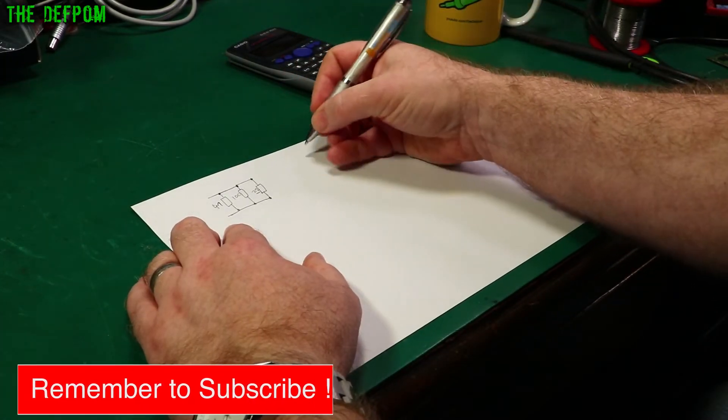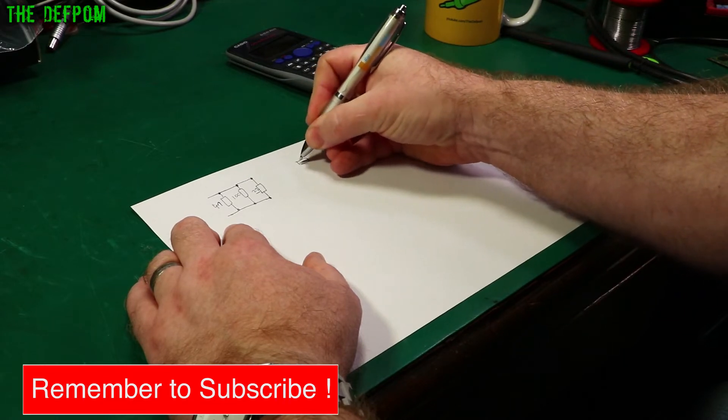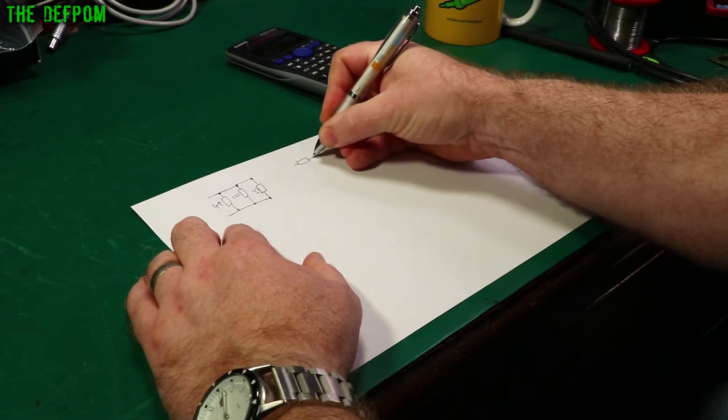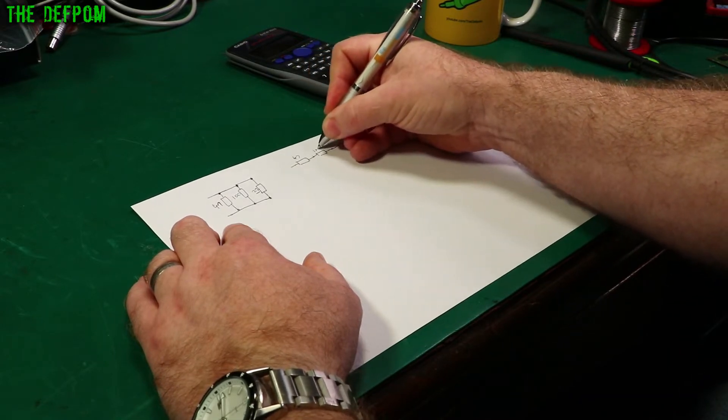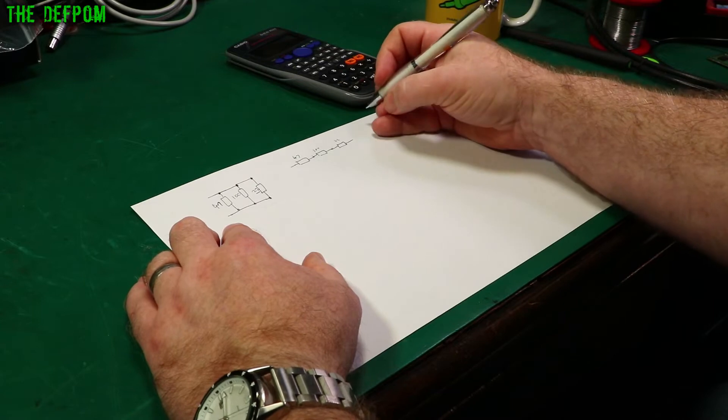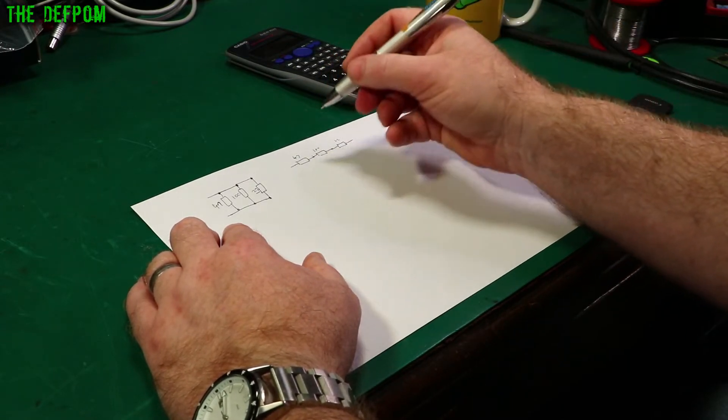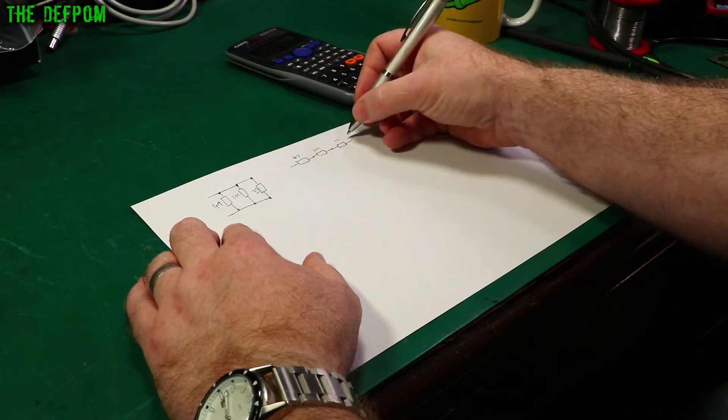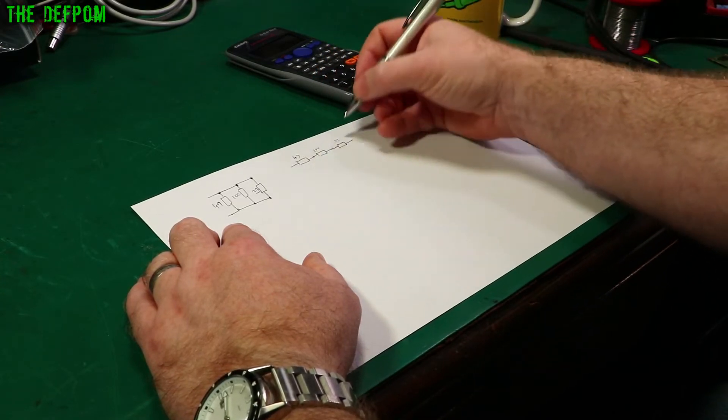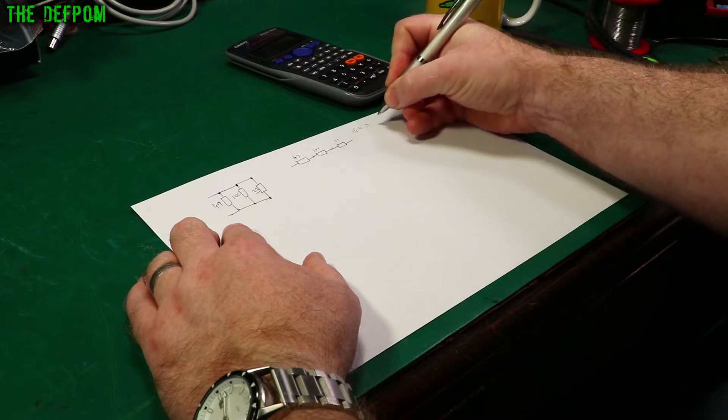Resistors also got series circuits which is a bit simpler to do. Series circuit could have three resistors in series and we use the same values. 47, 100 and 22 ohms. Now in this case in a series system for resistors you just add them together. So in this case that total resistance there is 100 plus 47 plus 22. So that's 169 ohms.